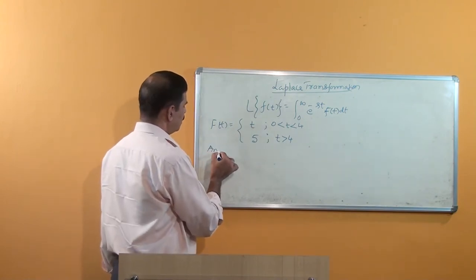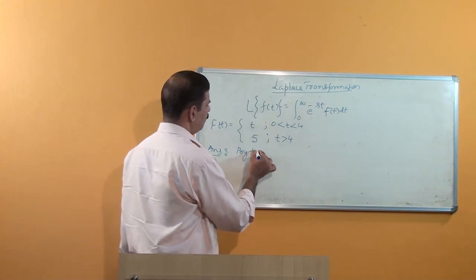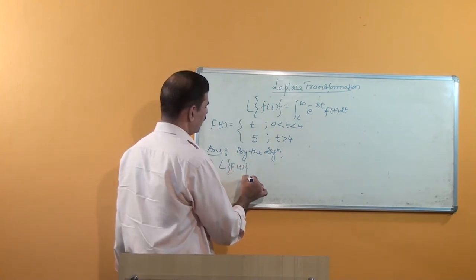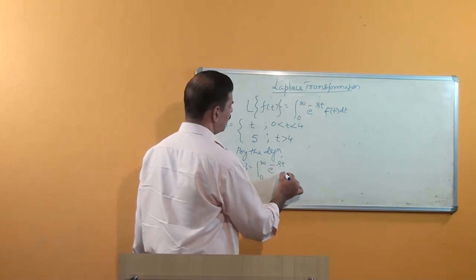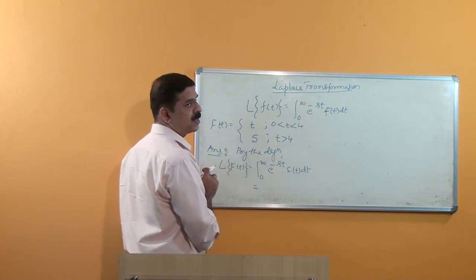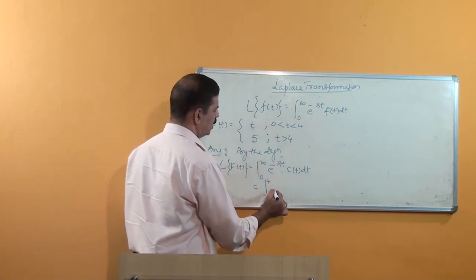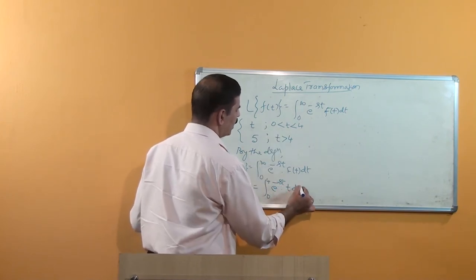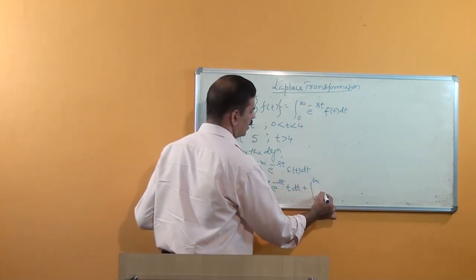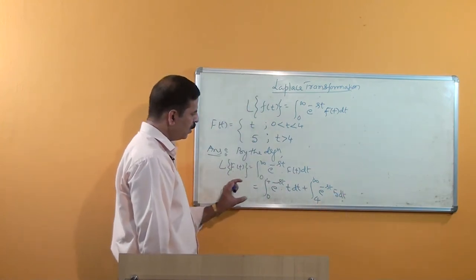So how do we find that? By using the definition itself. The Laplace of the given function f(t) is equal to the integral from 0 to infinity of e to the power minus st into f(t) dt. But here the function is piecewise continuous, so we split it: from 0 to 4, f(t) equals t, so we write the integral of e to the power minus st times t dt, plus from 4 to infinity, f(t) equals 5, so we add the integral of e to the power minus st times 5 dt.